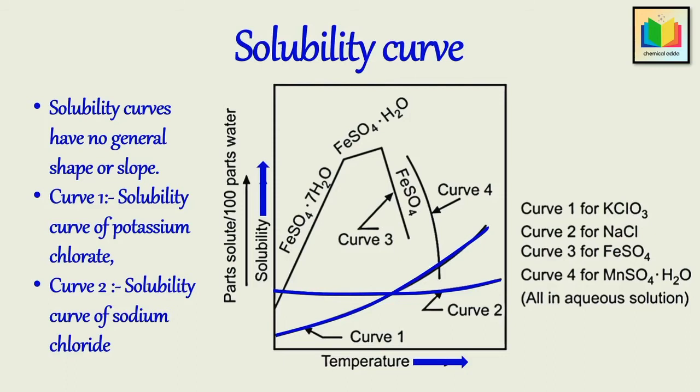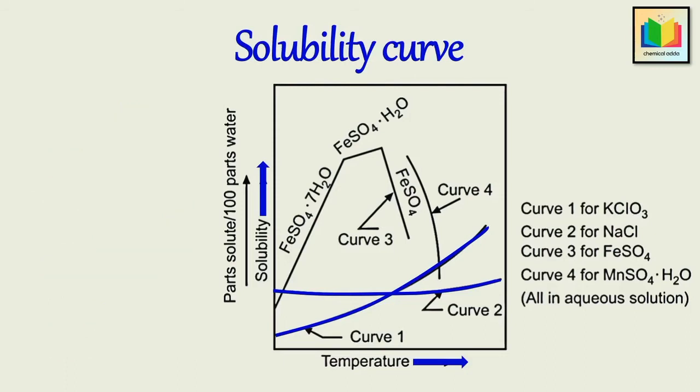But sometimes, the solubility curve exhibits sudden changes of direction. And these curves are therefore referred to as discontinuous solubility curves. For instance, solubility curve of FeSO4, that is curve 3.